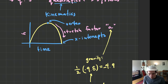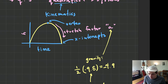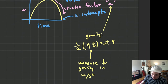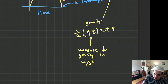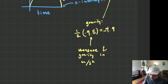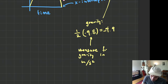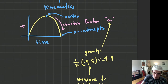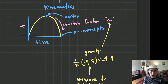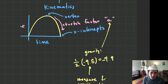When thinking about which quadratic equation or function you're going to use to solve this — no matter which form it is, vertex form, factored form, or standard form — you will have a stretch factor of negative 4.9. I just really wanted to be clear about that ahead of time.